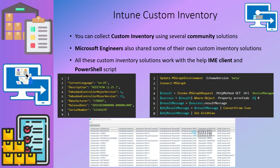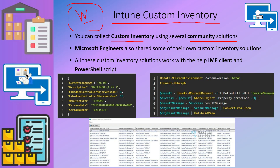There are custom inventory options available for Windows devices only. I have not seen custom inventory options for other platforms such as iOS, Mac OS, or Android. You can collect custom inventory using community solutions — there are a lot of community solutions available, most published on GitHub. This is not a straightforward process; you need to create automation in Azure, have Azure Log Analytics, and export inventory details from clients to a Log Analytics Workspace, similar to Windows Update for Business reports.